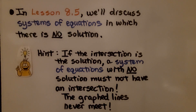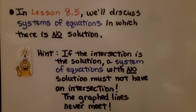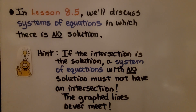In this video we discussed one solution for a system of equations, and also an infinite number of solutions when the lines share the same graphed line. In lesson 8.5 we'll discuss systems with no solution. Here's a hint: if the intersection is the solution, then a system with no solution must not have an intersection — the graphed lines never meet. Two lines that never meet are parallel lines.